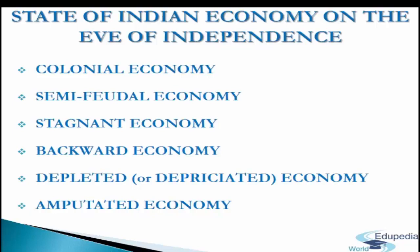The last point is amputated economy. The Britishers' policy of divide and rule always promoted discrimination between various groups on the basis of religion, caste, language and culture. As a result, on the eve of independence, the country was geographically divided into two parts — India and Pakistan. Partition of the country virtually disrupted the economy due to the problem of rehabilitation of large number of refugees from Pakistan and shortage of raw material for jute and cotton mills, as most of the cotton and jute growing areas went to Pakistan.